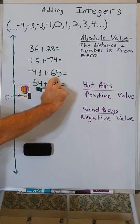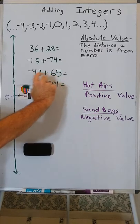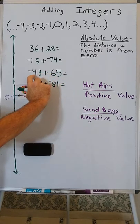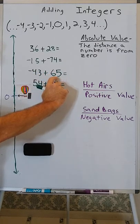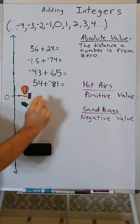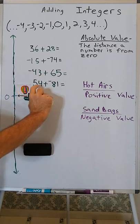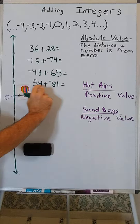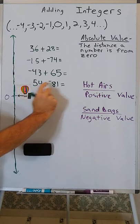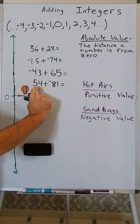One is negative and one is positive, and the positive value is further from zero than the negative value — that is, the positive value has a greater absolute value than the negative value. Or you could have a negative and a positive where the negative value is further from zero than the positive value.